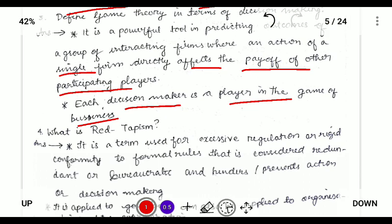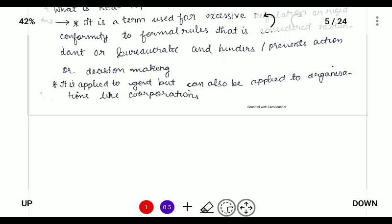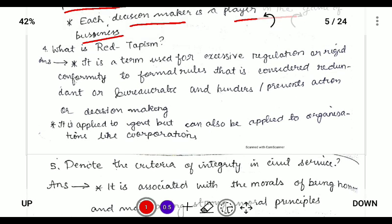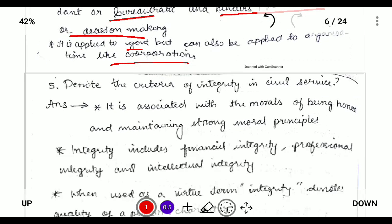Next: what is red tapism? Red tapism basically means excessive regulation or rigid conformity to formal rules. It is bureaucratic, it hinders and prevents decision making, and it is not only seen in government but also in corporations and organizations.